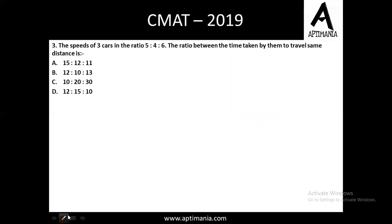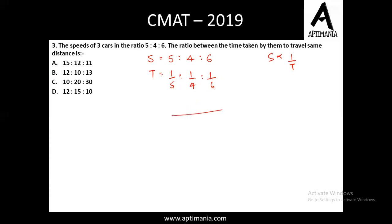Question number 3 is from time, speed and distance. The speed of 3 cars is in the ratio 5:4:6. We need to find the ratio of time taken to travel the same distance. Since distance is the same, speed is inversely proportional to time, so the time ratio is 1/5 : 1/4 : 1/6. Taking LCM of 5, 4, 6 as 60, we get 12:15:10. The correct answer is option D, 12:15:10.